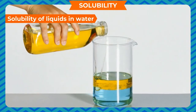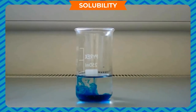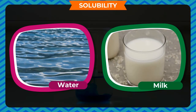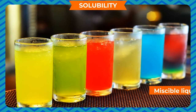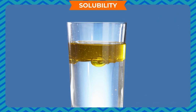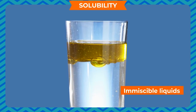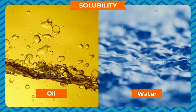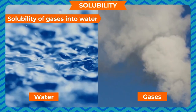Solubility of liquids in water: some liquids mix with each other — for example, water and milk mix easily. Liquids that mix with each other are known as miscible liquids. Those liquids which cannot mix with each other are called immiscible liquids, such as oil and water, petrol, and kerosene.